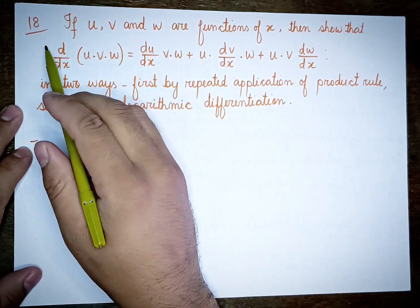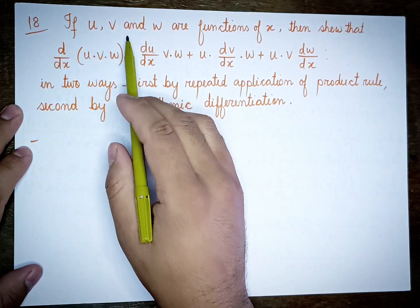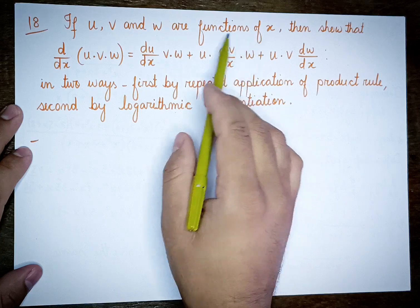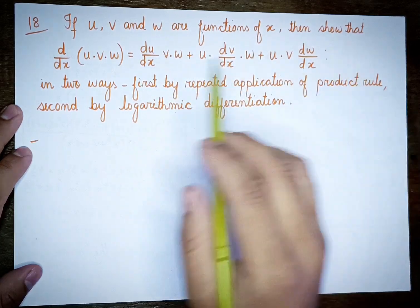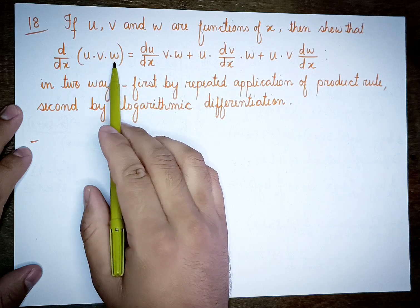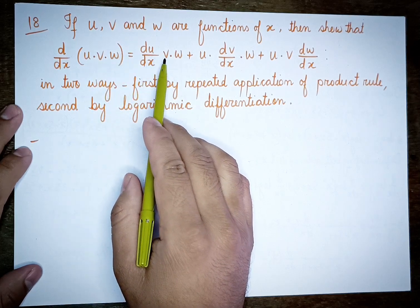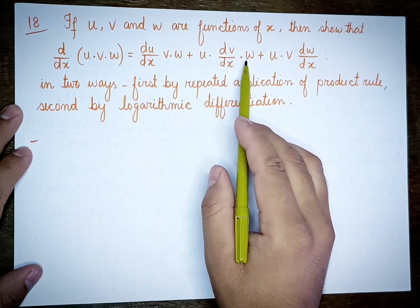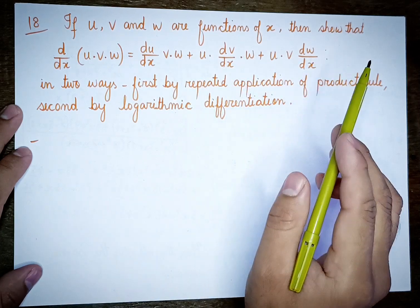Question number 18: If u, v, and w are functions of x, show that d/dx of u into v into w equals du/dx into v into w, plus u into dv/dx into w, plus u into v into dw/dx.